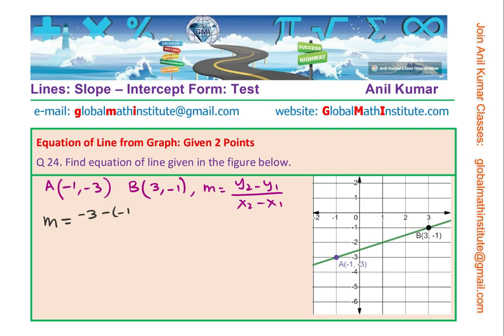Minus of minus 1 divided by minus 1 minus 3. So that gives you minus 3 plus 1 over minus 1 minus 3 or minus 2 over minus 4 or it is half. Definitely the line is rising and therefore positive slope is correct.